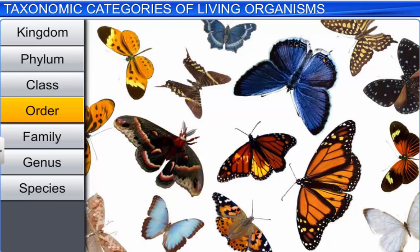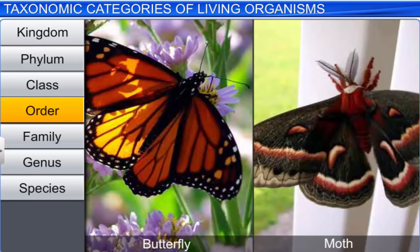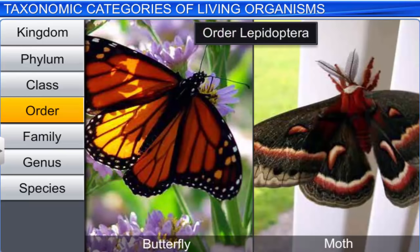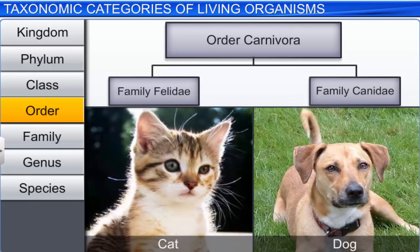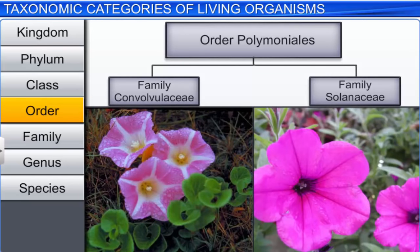Order is the next category, which is a collection of related families. However, the number of similarities is less than that seen in a family. For example, the order Lepidoptera includes butterflies and moths, belonging to the families Papilionidae and Tineidae, respectively. Similarly, families like Felidae and Canidae are included in the order Carnivora. While plant families like Convolvulaceae and Solanaceae are included in the order Polemoniales, on the basis of floral characters.